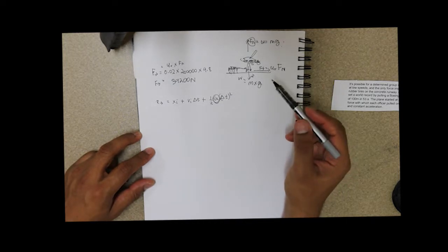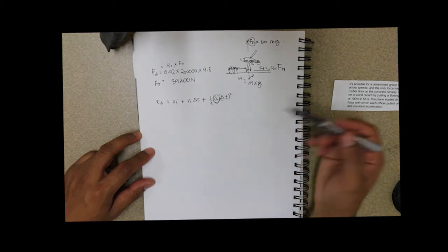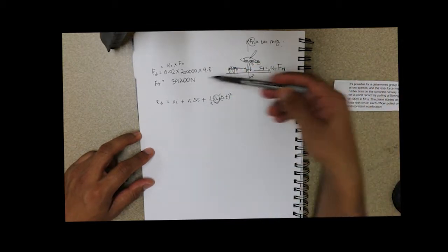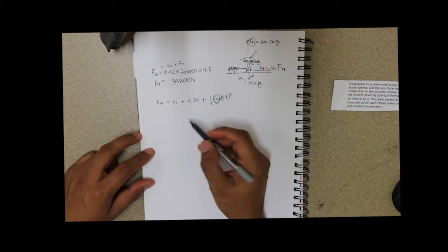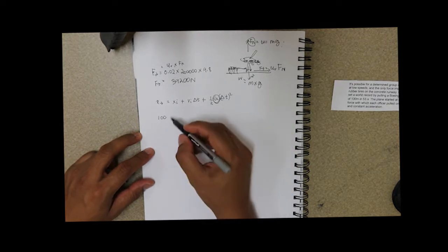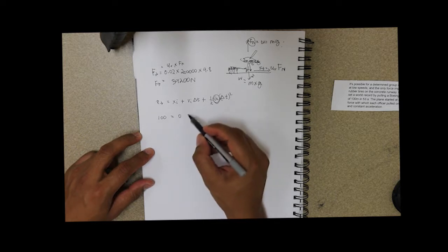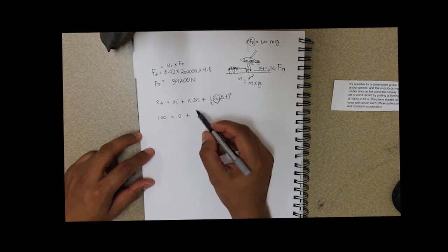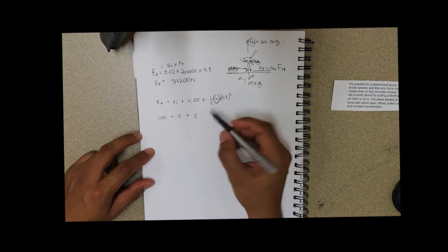Then use the acceleration to find out the force with which these officers are pulling. So our final position is 100 meters, our initial position is 0, our initial velocity is 0, the plane started from rest.